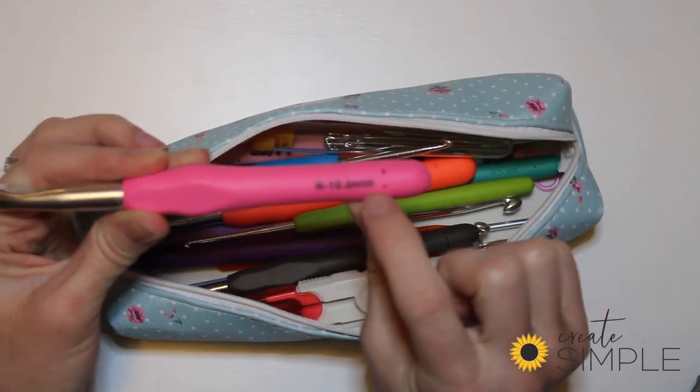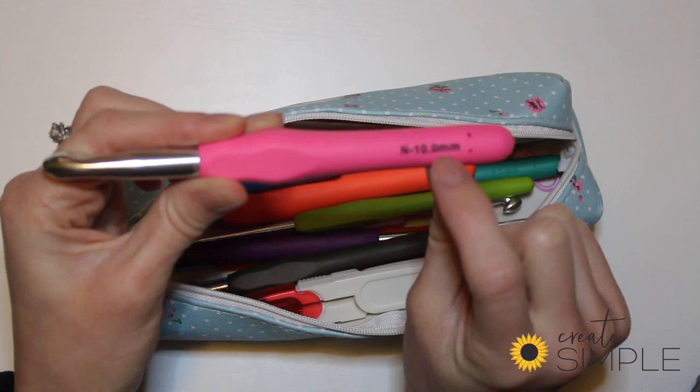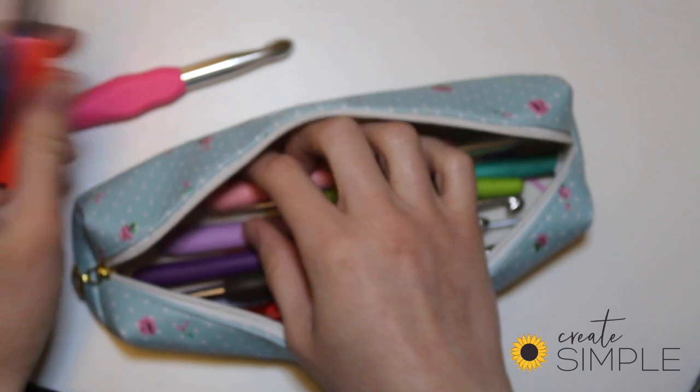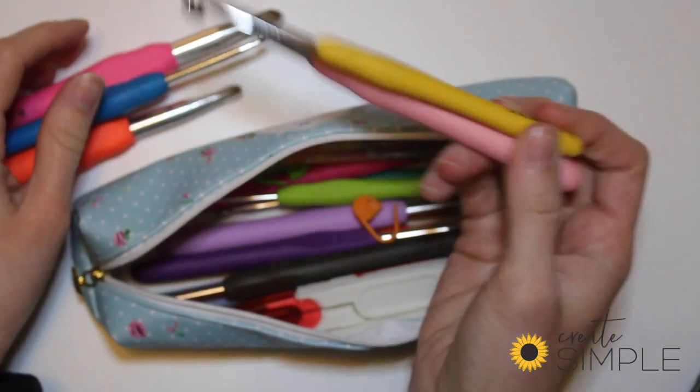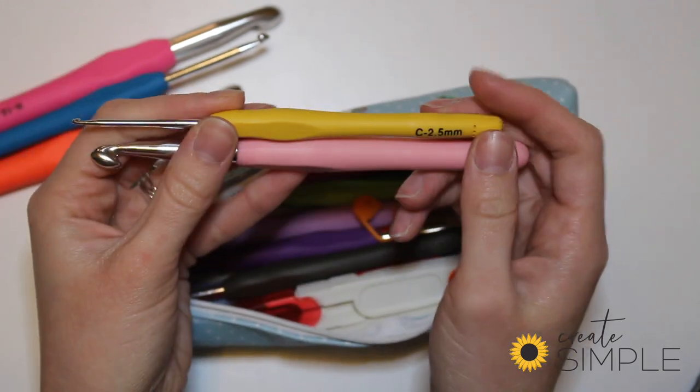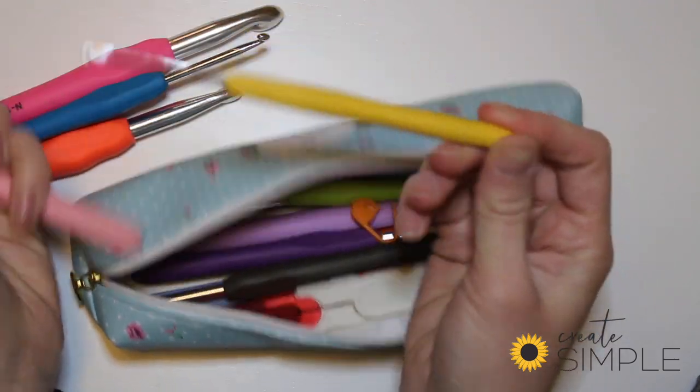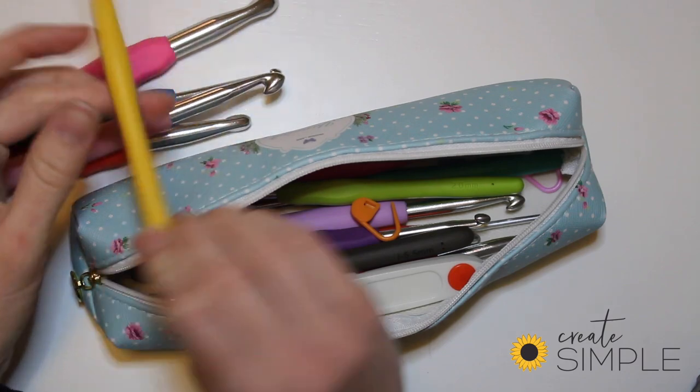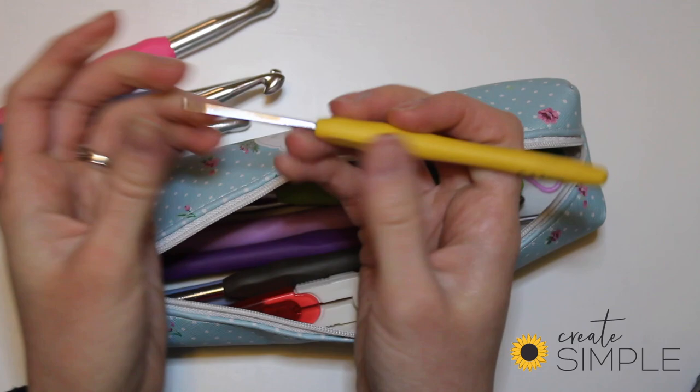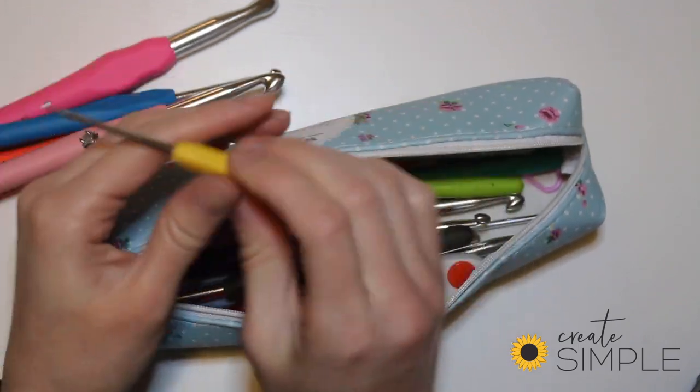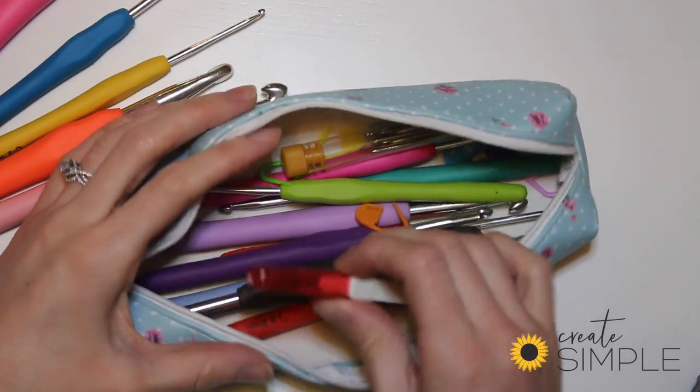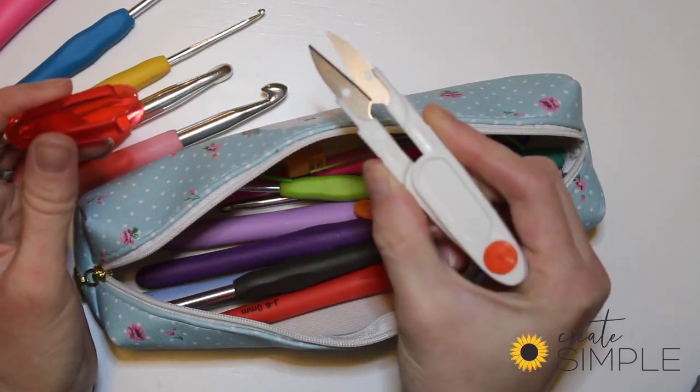You have all these different sizes, all the different colors, which makes it really easy to find. You can put your project away later and go back and say I know I was using the yellow hook and easily find it. It's on the side and this is like a silicone or rubber to hold onto, so much more comfortable to hold in your hand. You have all your hooks and then it comes with little mini scissors, which are really handy.